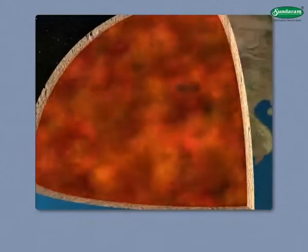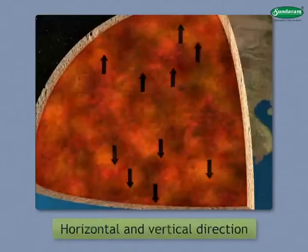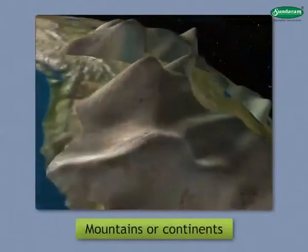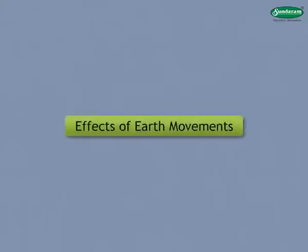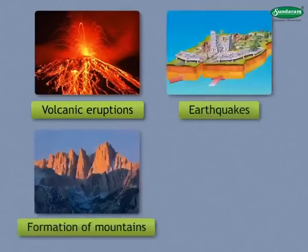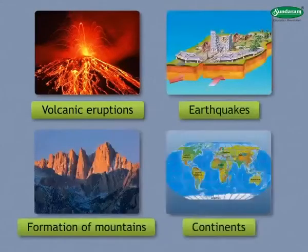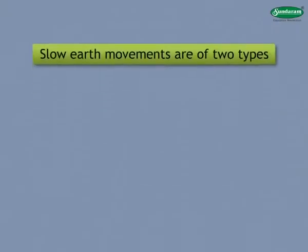The slow earth movements take place in horizontal and vertical directions. These movements give rise to mountains or continents through the process of folding and faulting. The effects of earth movements include volcanic eruptions, earthquakes, and the formation of mountains or continents.